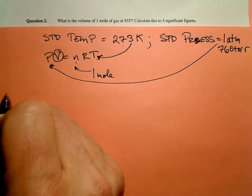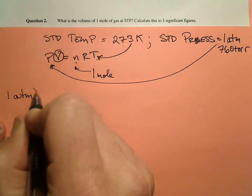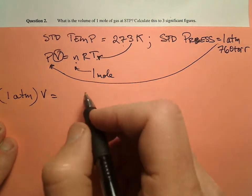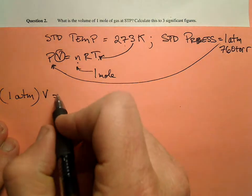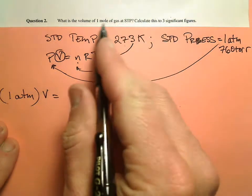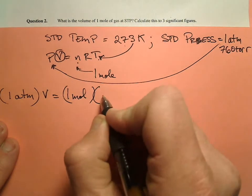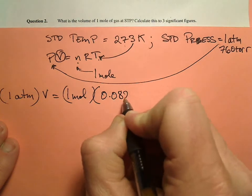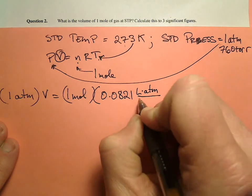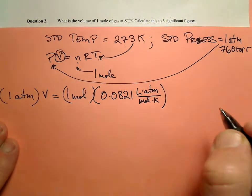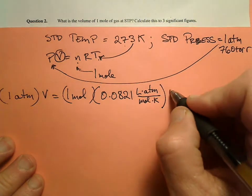So we have the pressure, one atmosphere, times the volume, is equal to N, which is 1 mole, R, which is 0.0821, remember it says long units, liter atmospheres per mole kelvin, times T, which is standard temperature, which is 273 kelvins.